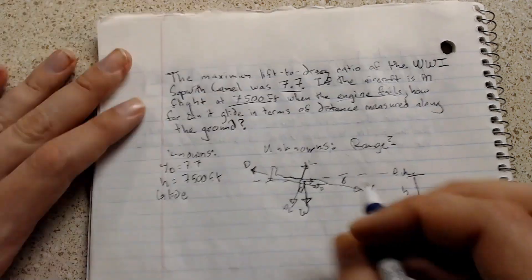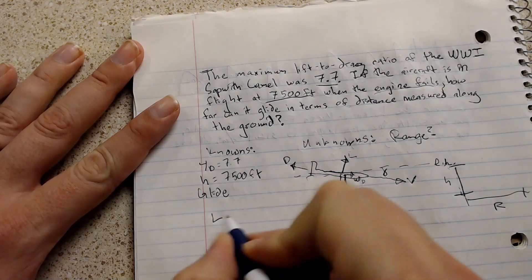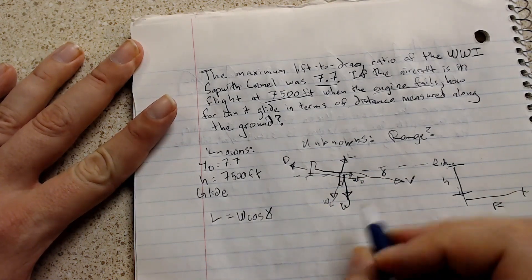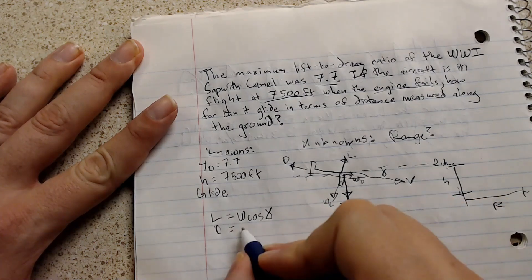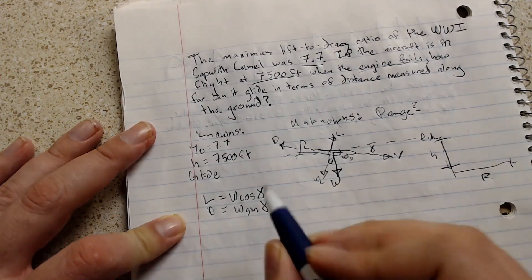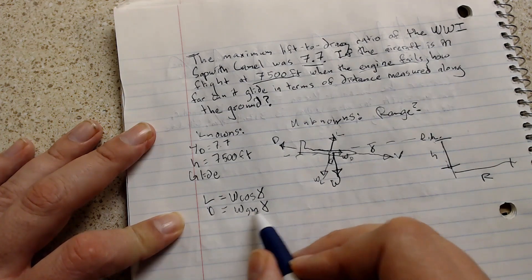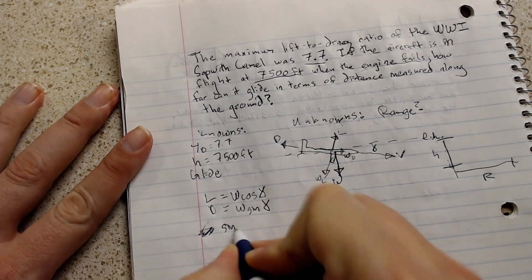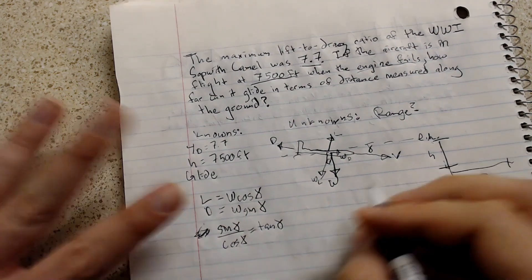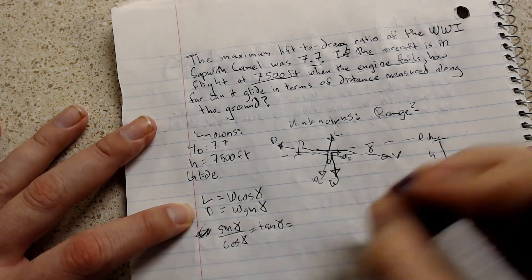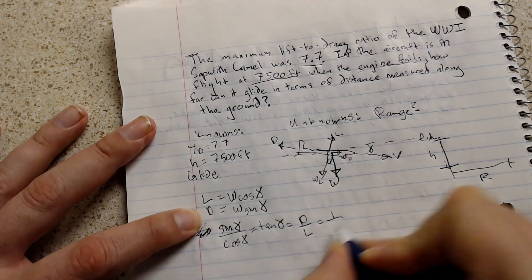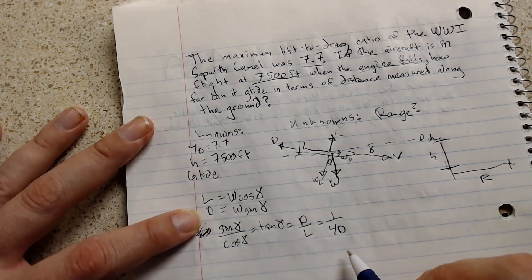So if we write out those equations right here on the left, we'll get lift is equal to the weight times the cosine of the flight angle. And then we'll also get drag is equal to the weight times the sine of the flight angle. Now, if you remember your trigonometry, tangent of an angle is the same as sine of an angle over cosine of an angle. If we flip these, we can have sine of the flight path angle over cosine of the flight path angle equals tangent of the flight path angle. And that is equal to the drag over lift or one over the lift to drag. And we have that value.